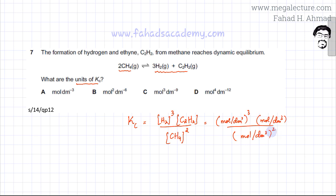If you cancel everything out, mole per decimeter cube gets cancelled, and this becomes power 2. All these get cancelled out, and if you solve it, it becomes mole squared divided by dm cube.